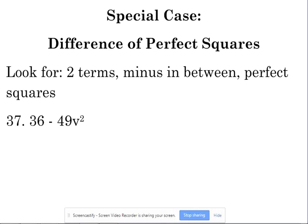36 is on our list, it's 6 squared. 49 is on our list, it's 7 squared. If you will remember, you should have done this before, but if you don't remember, let me remind you. We still end up with two sets of parentheses.